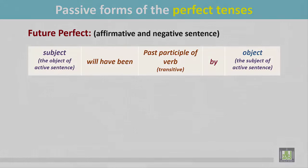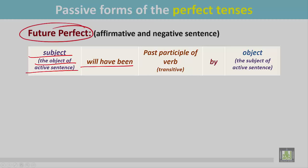Let's see their structure. The sentence begins with the subject, which is the object of the active sentence. Then 'will have been' for the future perfect. The transitive verb is in the past participle form, followed by the preposition, and finally the object, which is the subject of the active sentence.